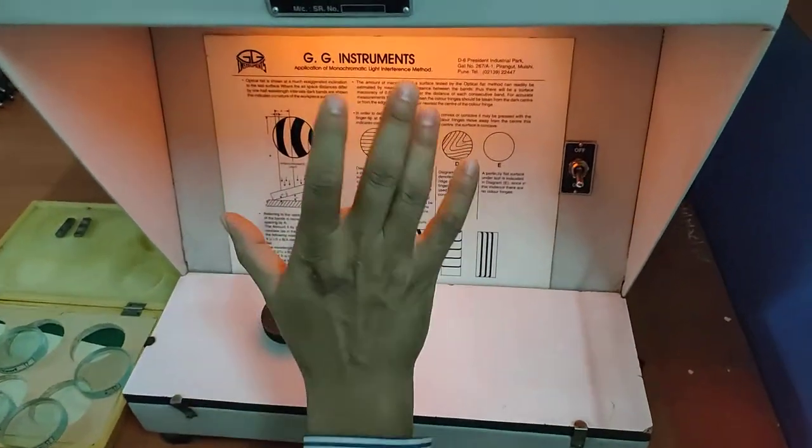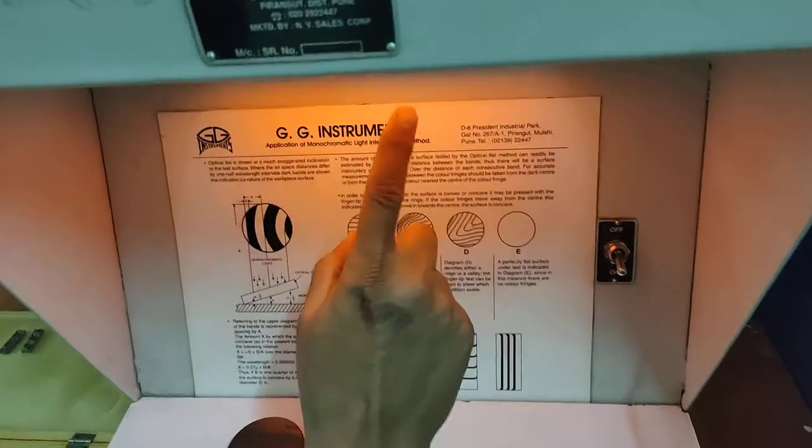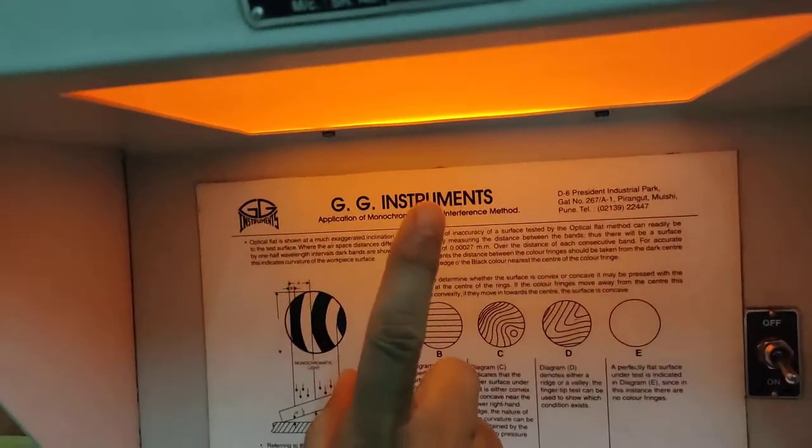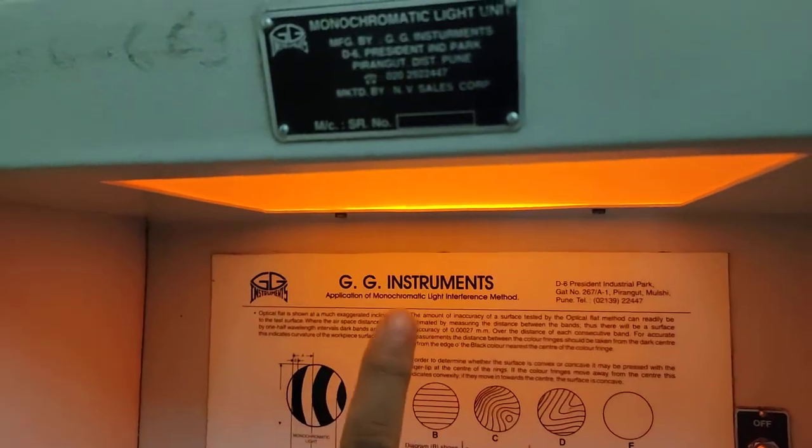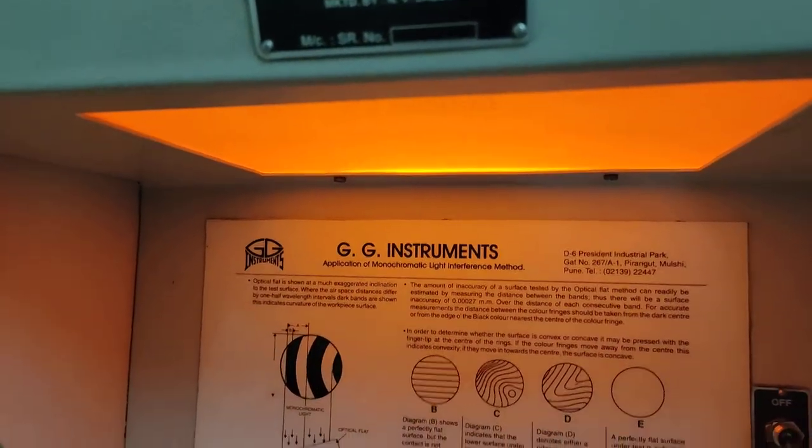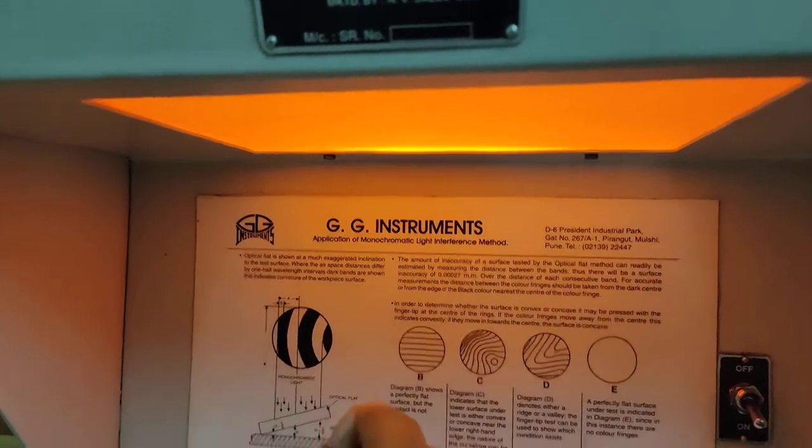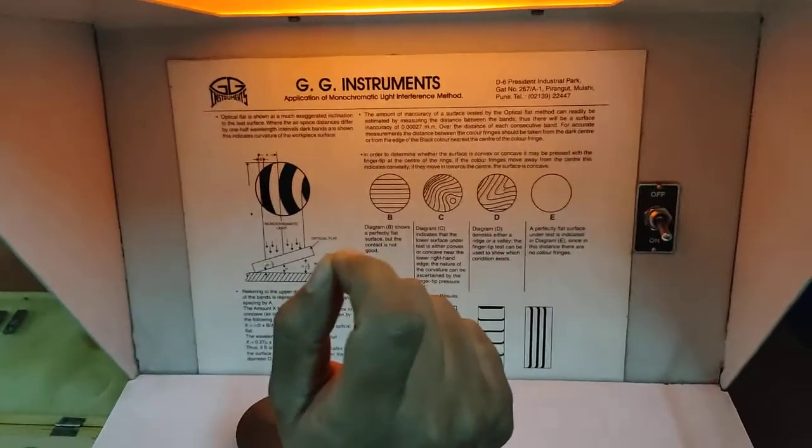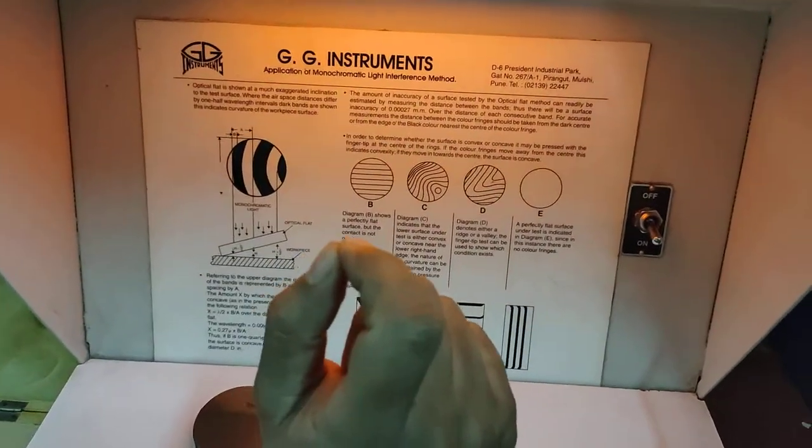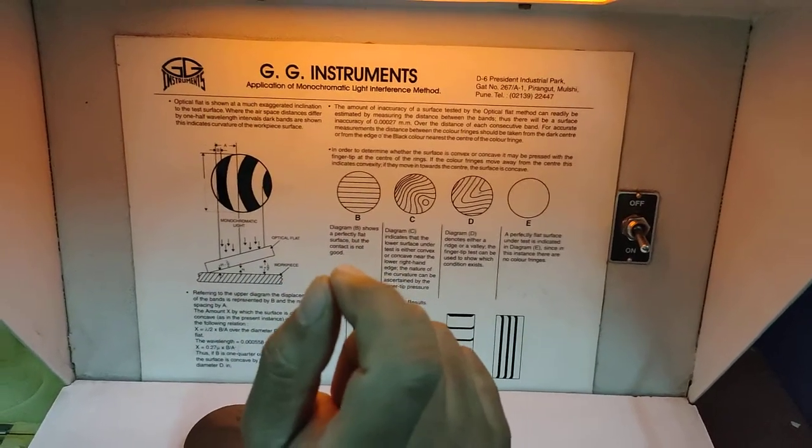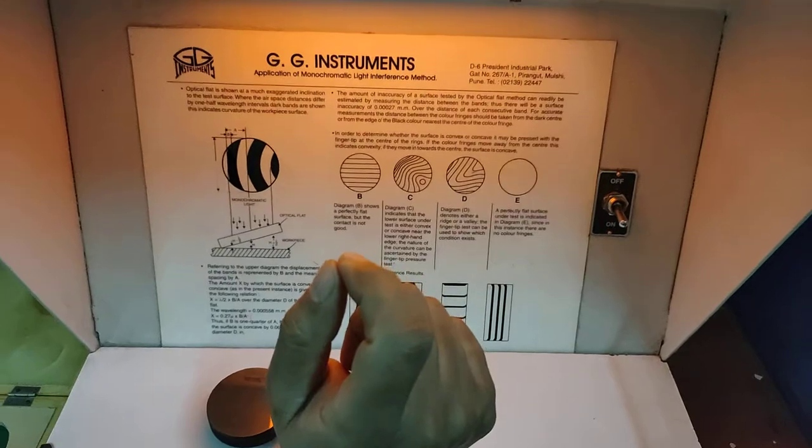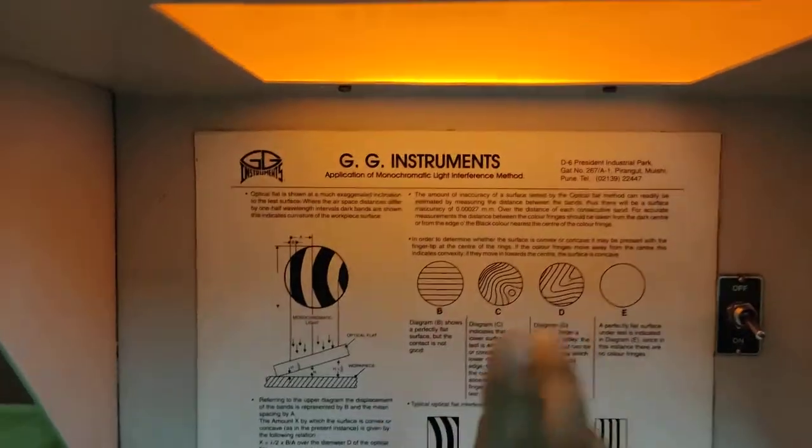This is the sodium vapor lamp we are going to use because it produces a monochromatic beam of light. Why monochromatic? Because we want only a single wavelength, that is single lambda. We are going to use this monochromatic beam for measurement or checking of flatness.